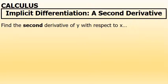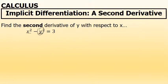Here is a problem where I'm being asked to find the second derivative of y with respect to x of an equation that involves a term of x squared and y squared. Implicit differentiation will be required to take the derivative of y squared, and because we're finding the second derivative, we'll have to use implicit differentiation more than once.